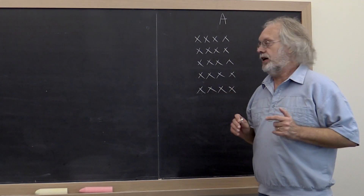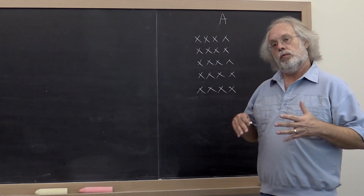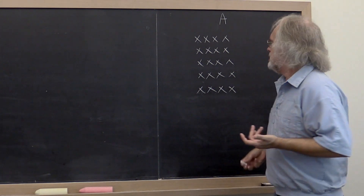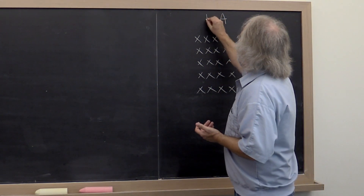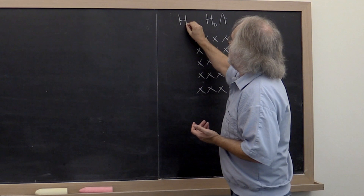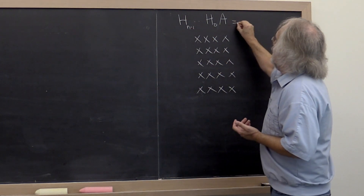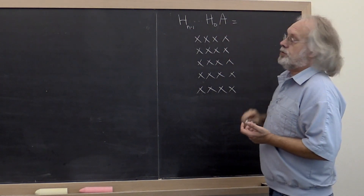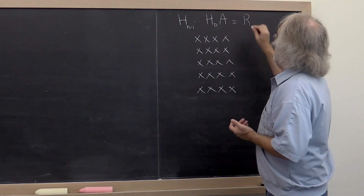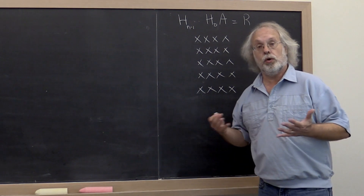Let's have a look at where this is all headed. We were saying that it would be nice if we could come up with a sequence of unitary matrices such that applying those from the left to matrix A leaves us with an upper triangular matrix — let's call it R.